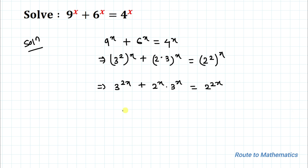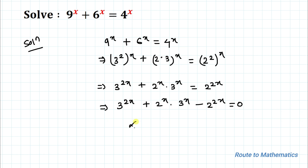Now taking all terms to the left-hand side, we have 3^(2x) plus 2^x · 3^x minus 2^(2x) equals 0.